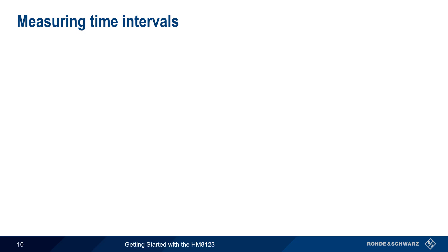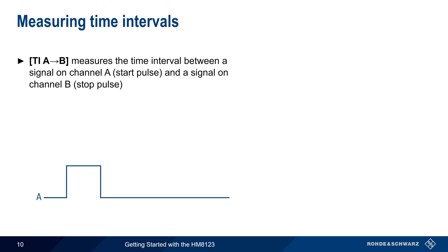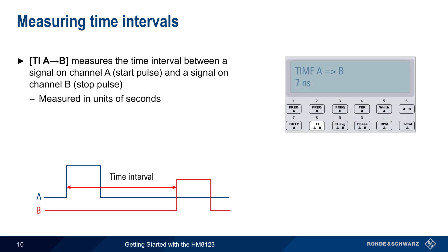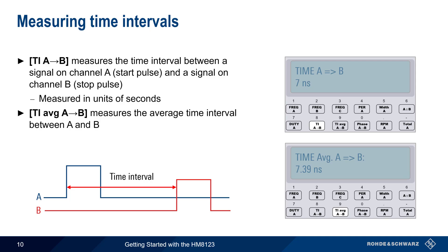Another type of two-channel measurement is time intervals. The TIAB key is used to measure the time interval between a signal on channel A, defined as the start pulse, and a signal on channel B, or the stop pulse. This is measured in units of seconds. The average interval can be calculated and displayed by pressing the measurement key TI-Average AB.